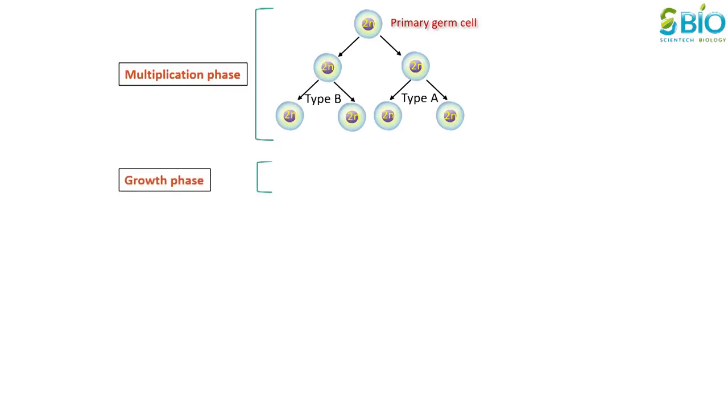In the next phase, the growth phase, type B spermatogonia actively grow into primary spermatocytes.